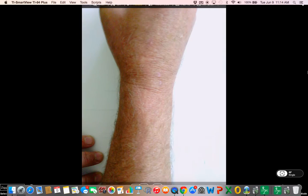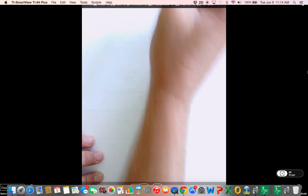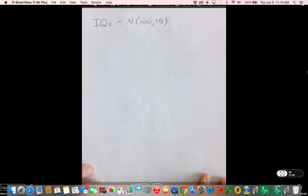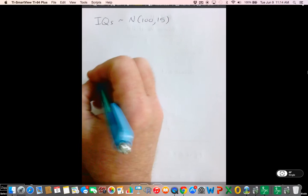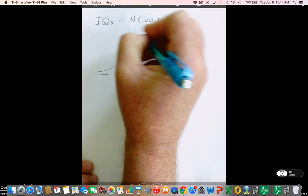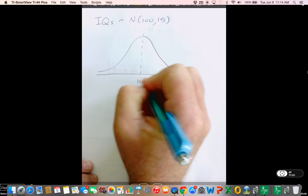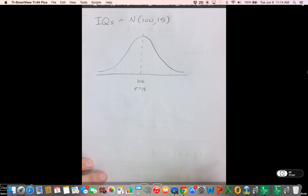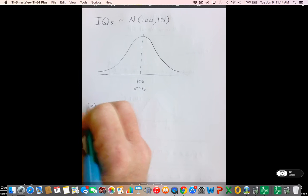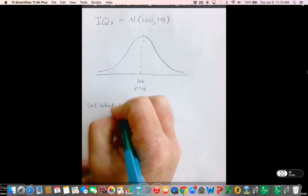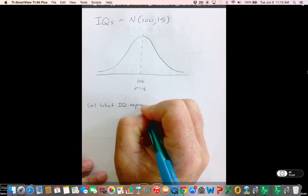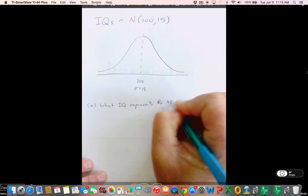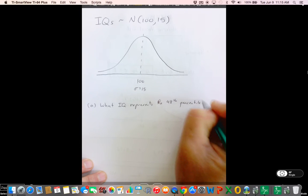So something we may want to do here is let's say that, let's just go back to our old buddy IQs, because I'm such a fan of making important decisions based on one test score. I mean, this, of course, would be an aptitude test. So let's say again, we get our normal distribution here, mean of 100, standard deviation 15. And we have the following type of question: What IQ represents the 48th percentile?